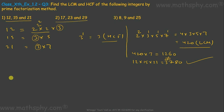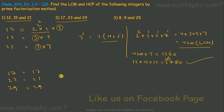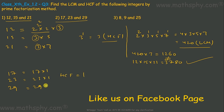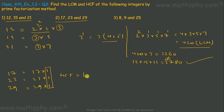Now the second set: 17, 23, and 29. Since 17, 23, and 29 are all prime numbers, the HCF would be 1. We can write 17 × 1, 23 × 1, and 1 is common to all, so HCF = 1.